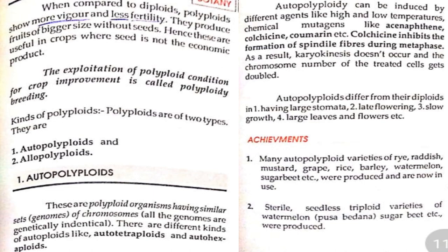There are many crop varieties which are naturally polyploid. When compared to diploids, polyploids show more vigor but less fertility. They produce fruits of bigger size without seeds; hence they are useful in crops where the seed is not the economic product. The exploitation of polyploidy conditions for crop improvement is called polyploidy breeding. Polyploids are of two types: autopolyploid and allopolyploid.